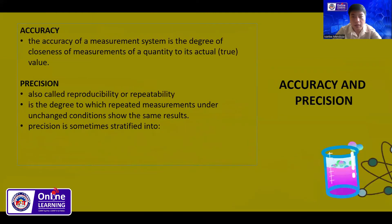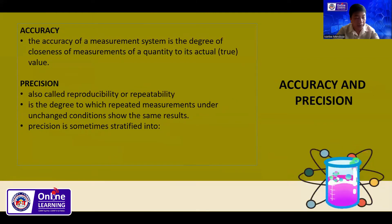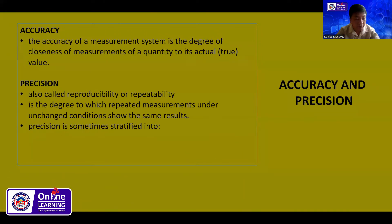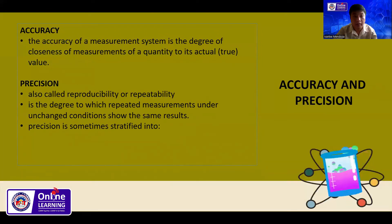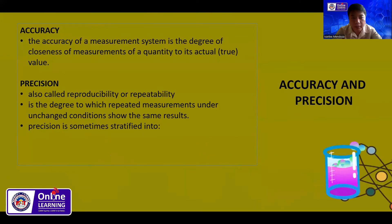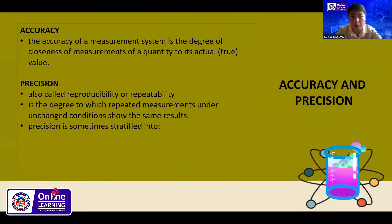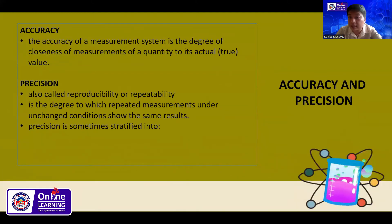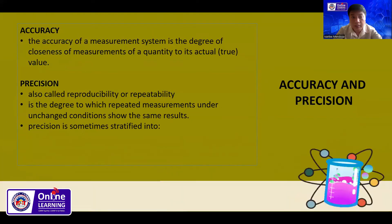We also have what we call accuracy and precision. Accuracy of a measurement system is the degree of closeness of measurements of a quantity to its actual or true value. Precision, also called reproducibility or repeatability, is the degree to which repeated measurements under unchanged conditions show the same result.